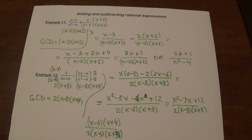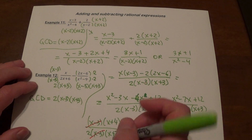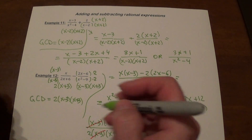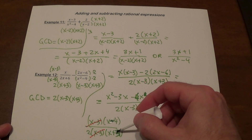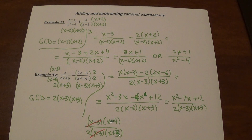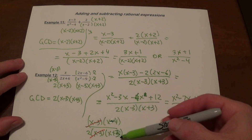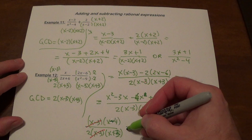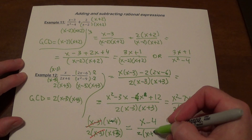The denominator is 2 times x minus 3 times x plus 3. Both the numerator and denominator have x minus 3, so we can cancel that factor. We're left with x minus 4 in the numerator and 2 times x plus 3 in the denominator.